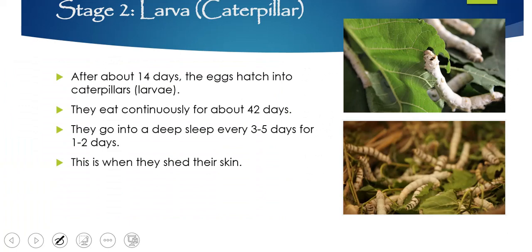Stage two is the caterpillar or larva stage. About 14 days after the eggs have been laid, they hatch into caterpillars and eat continuously for 42 days. Except every three to five days, they have a nap lasting between one and two days.